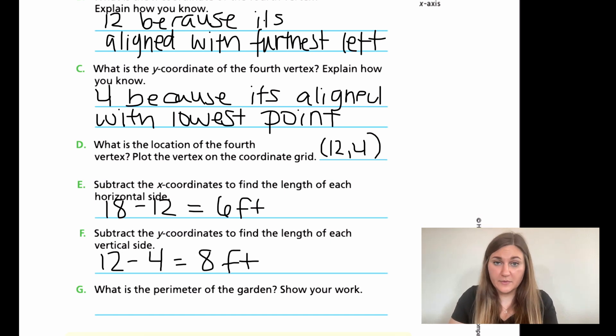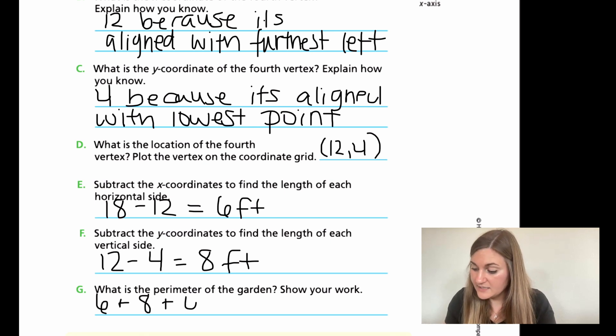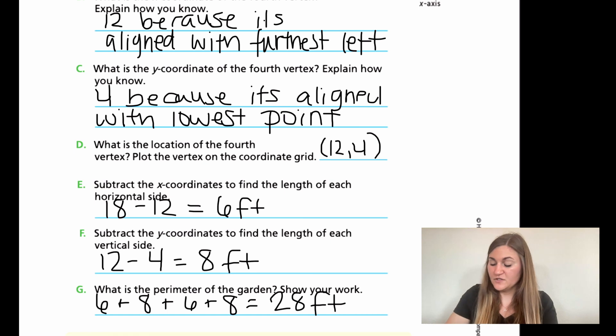Now you have the perimeter. You have your length and your width four times. I'm going to have 6 feet and then 8 feet, and then again 6 feet and then 8 feet. If you add all of those together, you're going to have a total of 28 feet. So 6 plus 8 is 14, and 6 plus 8 is 14, and 14 plus 14 is 28.